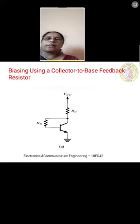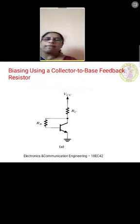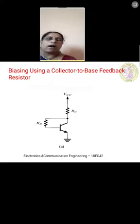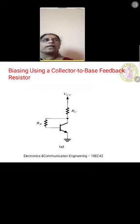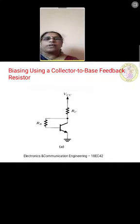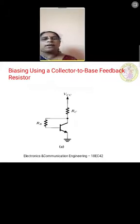To begin with biasing using collector-to-base feedback resistor, here is the circuit diagram on the screen. In comparison with the previous voltage divider bias circuits, here we have only one resistor Rb which is connected between base and the collector. Recall that in a voltage divider bias circuit there were two resistors R1 and R2 used to derive Vb voltage, but here we have only one resistor Rb connected between base and the collector.